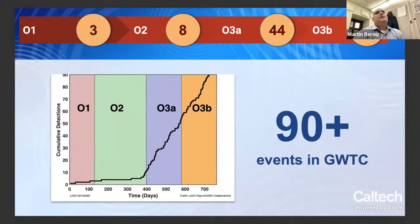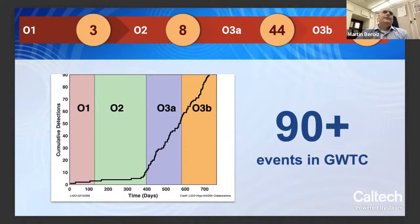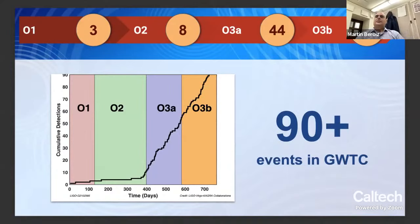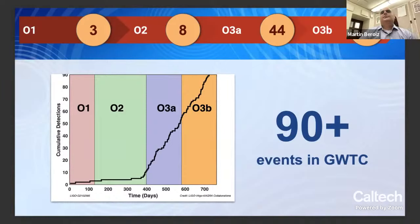This is a brief summary of the number of detections through the years. We have the first observing run, O1, that detected the first three gravitational waves — the first run that actually detected gravitational wave events. On the second run, O2, eight more events were detected. There's a big jump in the number of detections by an order of magnitude in O3: 44 events were detected in O3a, and another 35 in O3b. We now have a grand total of 90 confident events in the gravitational wave transient catalog, with a few additional marginal events.